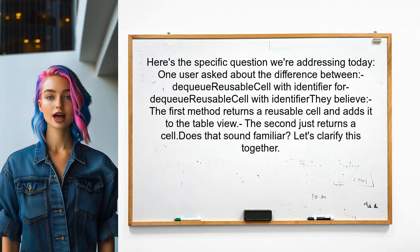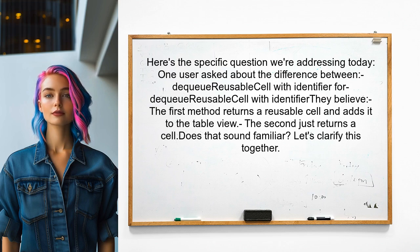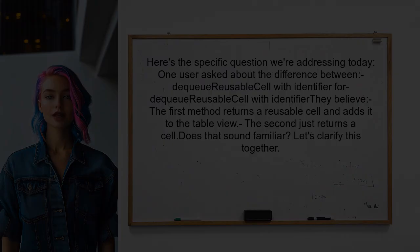Here's the specific question we're addressing today. One user asked about the difference between DQ Reusable Cell with Identifier for and DQ Reusable Cell with Identifier. They believe that the first method returns a reusable cell and adds it to the table view, while the second just returns a cell. Does that sound familiar? Let's clarify this together.